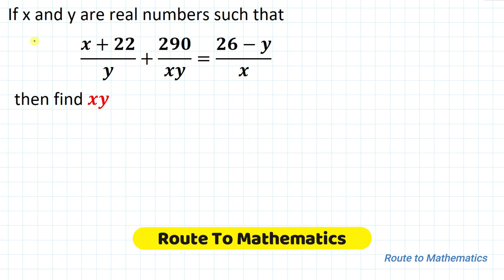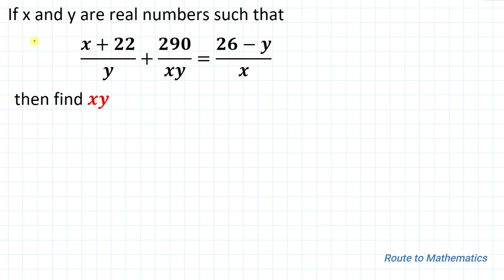Hello everyone, welcome to Root 2 Mathematics. In this video we're going to solve an interesting olympiad question. The given question is: if x and y are real numbers such that (x + 22)/y + 290/xy = (26 - y)/x, then find the value of xy.